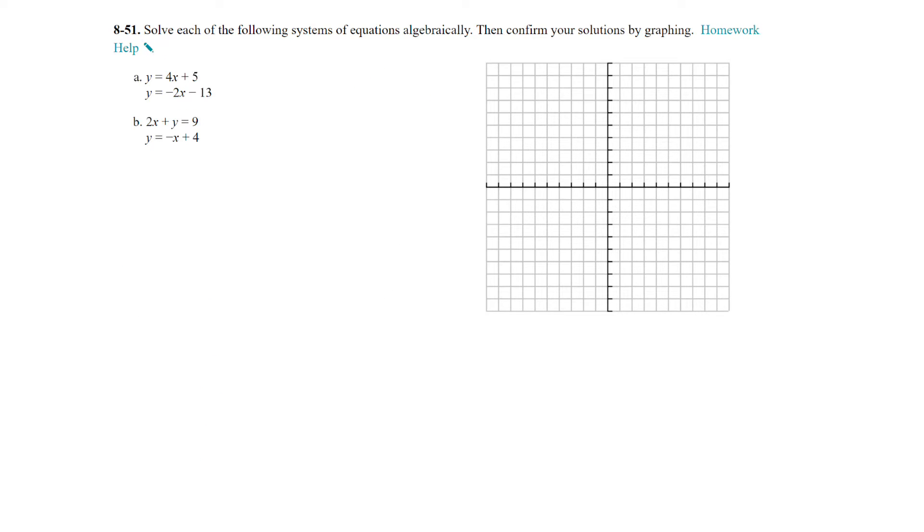Question 51. We want to solve the systems algebraically and then we'll graph them to confirm our solutions. So on A we can use the equal value method. 4x plus 5 is equal to negative 2x minus 13. Add 2x, subtract 5, divide by 6, then we get x equals negative 3. Plug that into one of the two equations, y equals 4 times negative 3 plus 5. And that is y equals negative 12 plus 5 or negative 7. So the solution is negative 3 comma negative 7.